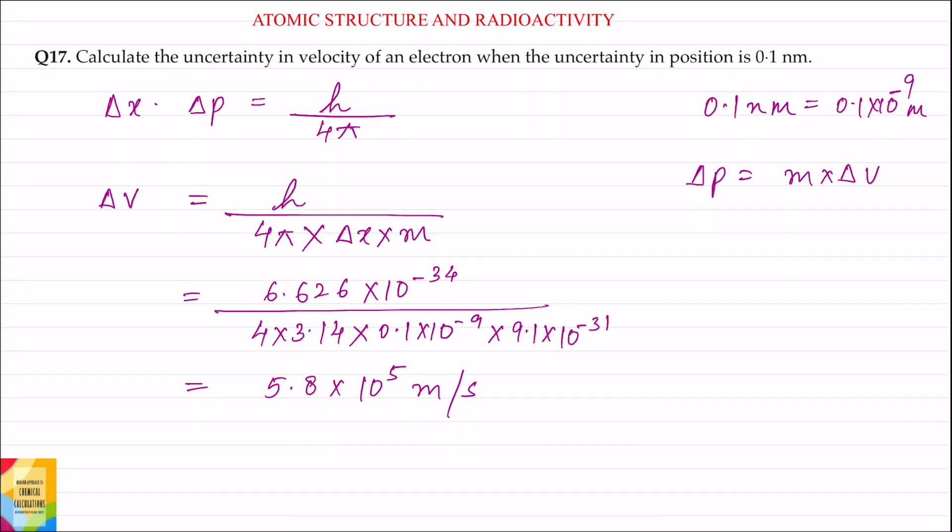Question 17. Calculate the uncertainty in velocity of an electron when uncertainty in position is 0.1 nanometer.